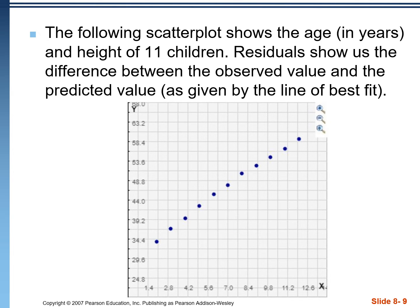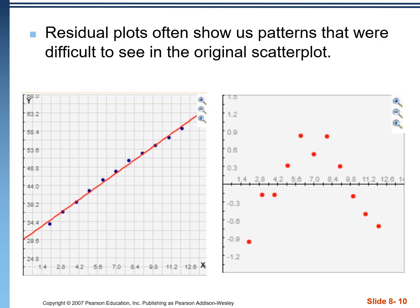We want to look at residual plots every time we make a regression equation, because sometimes we can see things in residual plots that we can't see in a normal scatter plot. If we look at a scatter plot at first glance, it may appear somewhat straight, linear, positive, strong correlation, no unusual features. But when the regression equation is drawn in, we can see that maybe it isn't so straight after all — on the left side we have points under the graph, then it rises above it, then dips back under. So this actually isn't linear; it's more curved and nonlinear.